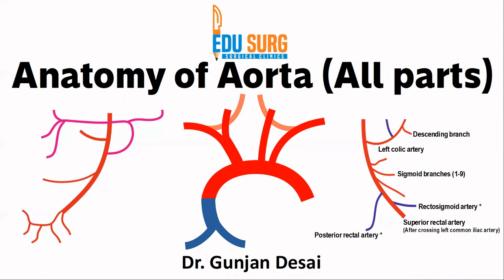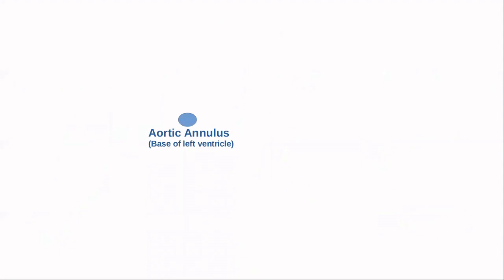Let us first see what are the parts of the aorta, how it begins, how it ends, and then we will see some key branches of these different parts. At the base of the left ventricle there is the aortic annulus, whose surface landmark is the third left costal cartilage lower border.